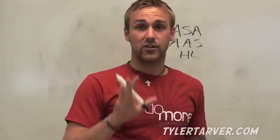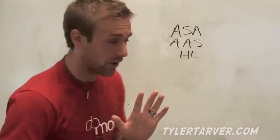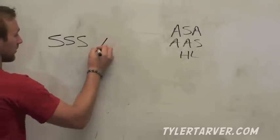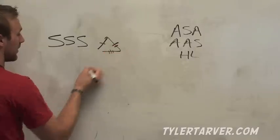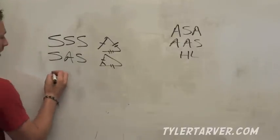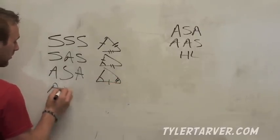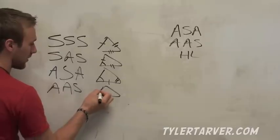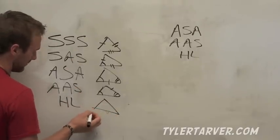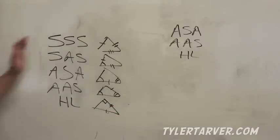Let me review all five triangle congruence theorems — five ways to prove two triangles are exactly the same. There's SSS, where all three sides are congruent. There's SAS — a side, an angle, and a side. There's ASA — an angle, a side, and another angle. There's AAS — an angle, another angle, and a side. And then HL, which is only for right triangles — the hypotenuse and one of the legs.